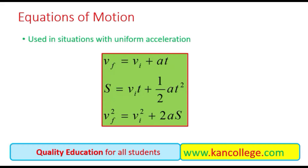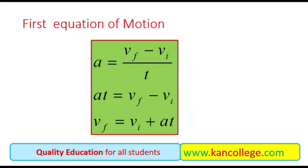Now we prove all three equations one by one mathematically. First equation of motion: as we know, Vf = Vi + At. It comes from the basic equation of acceleration. Acceleration is the rate of change of velocity — change of velocity per unit time — and the formula is ΔV over ΔT.